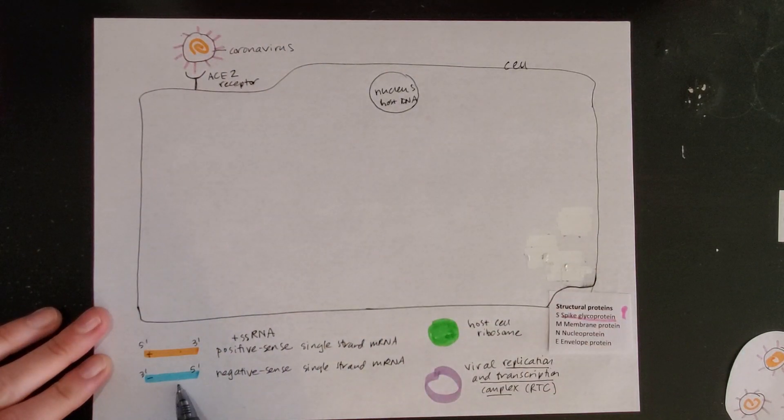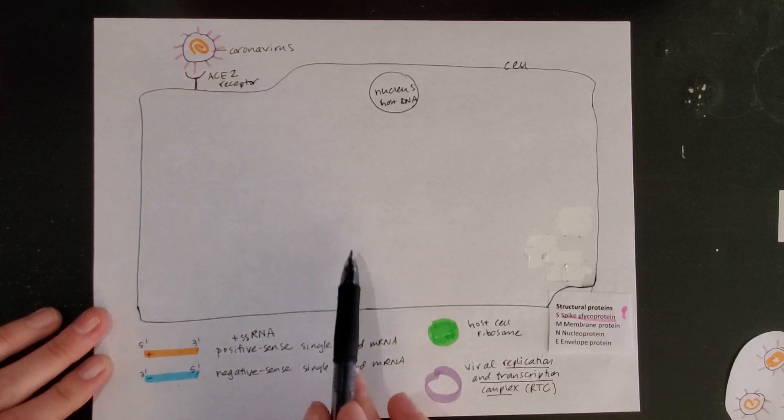We have a couple of things for reference down here. Positive sense single strand mRNA - that's what's inside of the coronavirus. We also have negative sense mRNA which we'll see show up in the process.